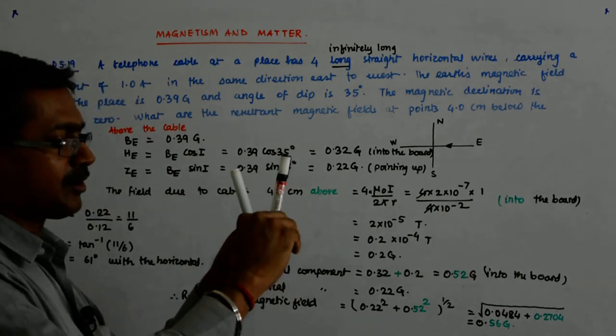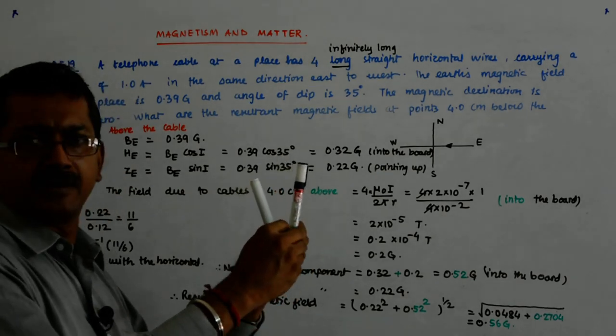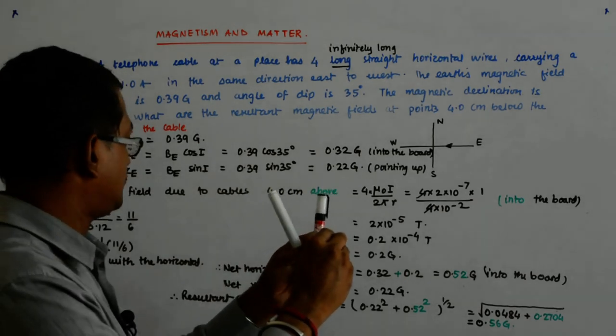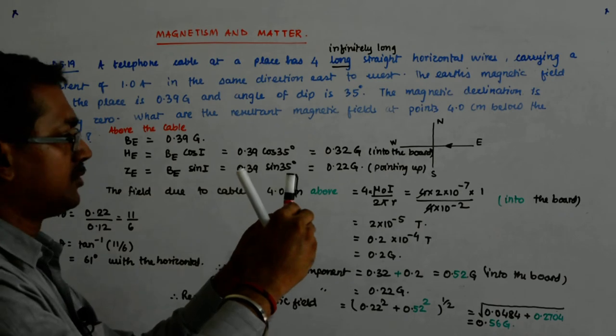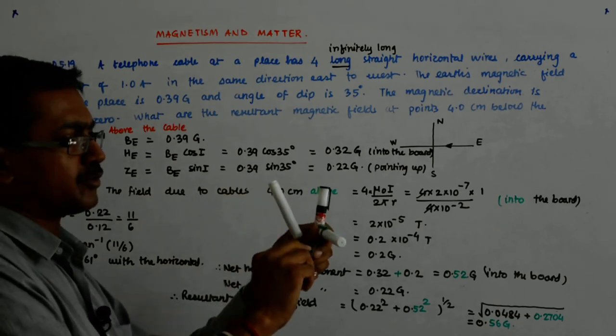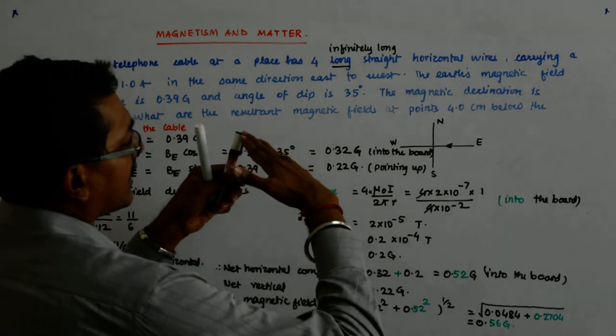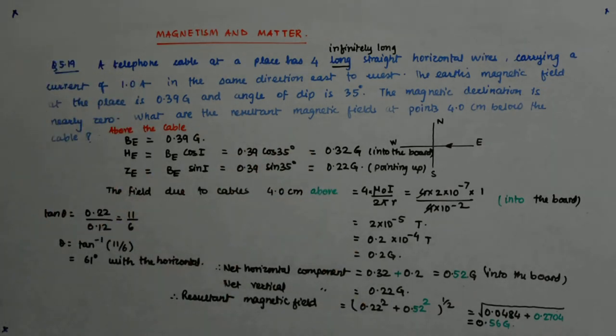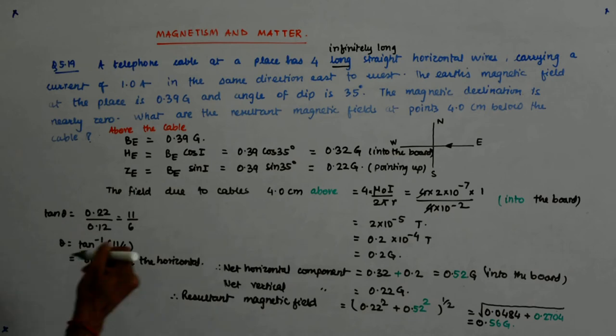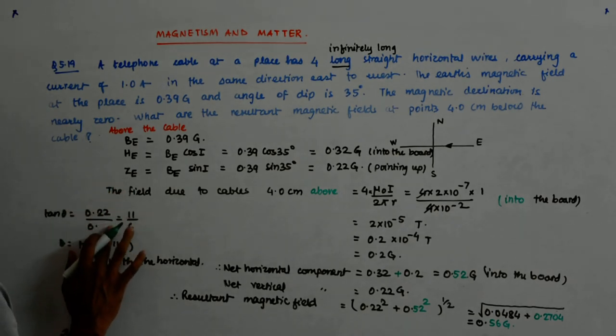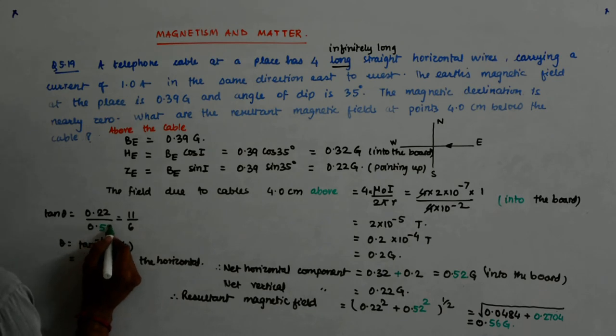Now, here what happens? The horizontal component becomes very big compared to this. This remains 0.22 while this becomes 0.52. So you understand? So this is the triangle that it is forming. So the angle that will be there, that becomes the vertical, 0.22 divided by the horizontal.